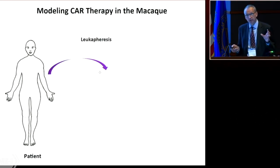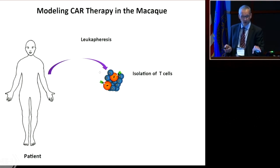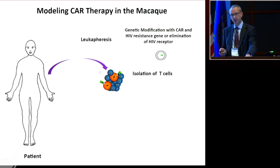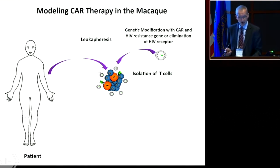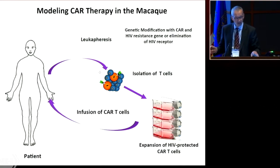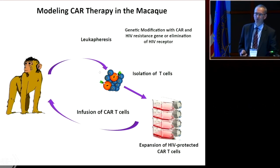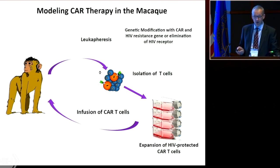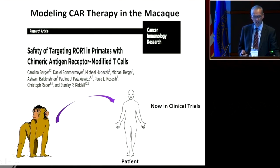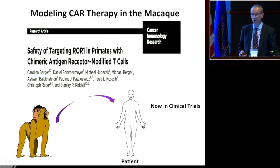For CAR T cell studies, we perform leukapheresis in patients, isolate specific T cell subpopulations, genetically modify and expand them, then re-infuse them. We do exactly the same in non-human primates using almost the same markers, making this highly translatable to humans. This has already been demonstrated at Fred Hutch by the Stan Riddell and Carolina Berger group, who modeled the safety of targeting ROR1 in primates using chimeric antigen receptor-modified T cells — a study now in clinical trials.